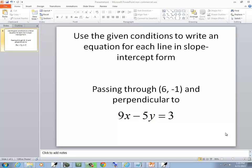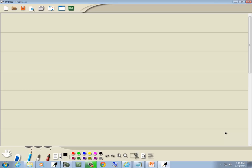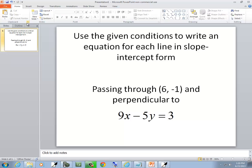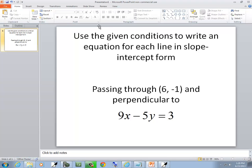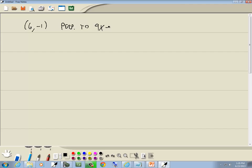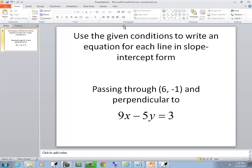In this problem, we want to use the given conditions to write an equation for each line in slope-intercept form. So we're passing through (6, -1), and it's perpendicular to 9x - 5y = 3.